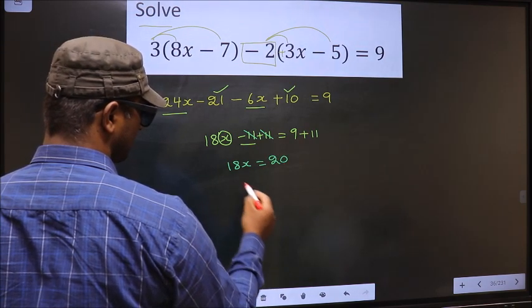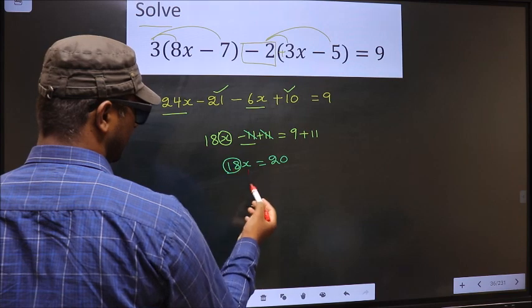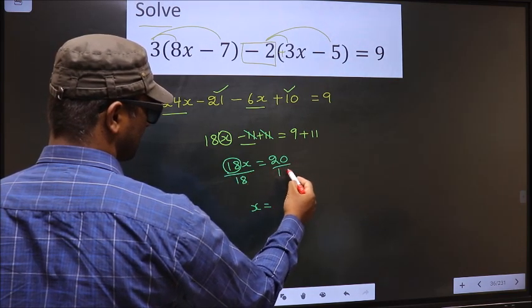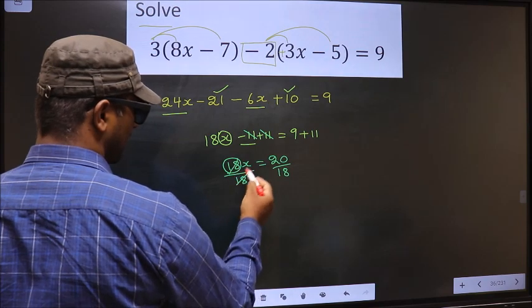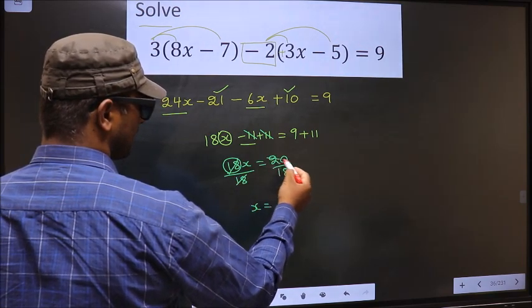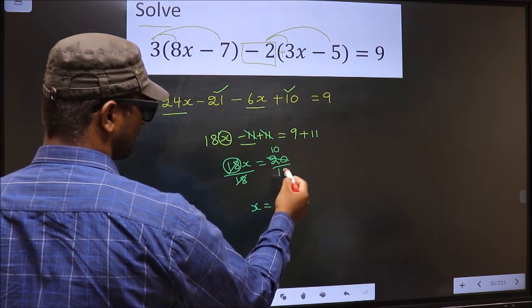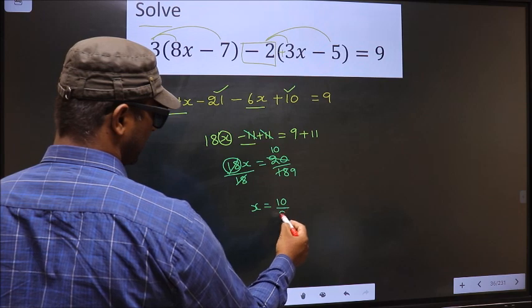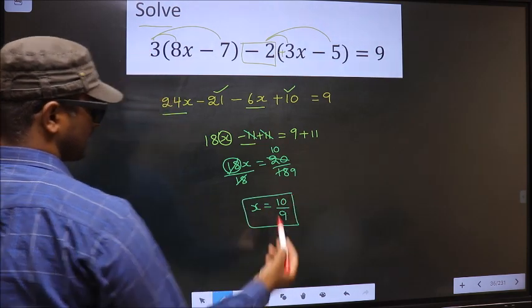Now to get x we should remove 18. To remove 18 you divide by 18 on both sides. This cancel out, here you get x equal to... Here let us cancel in 2 table. 2 10s, 2 9s 18. So we got 10 by 9 is our answer.